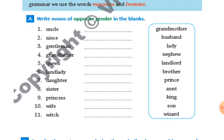Daughter, opposite is son. Princess, opposite is prince. Sister, opposite is brother. Wife, opposite is husband. Witch — a witch is a female magician, jadugarni. So the opposite of witch is wizard, means jadugar.